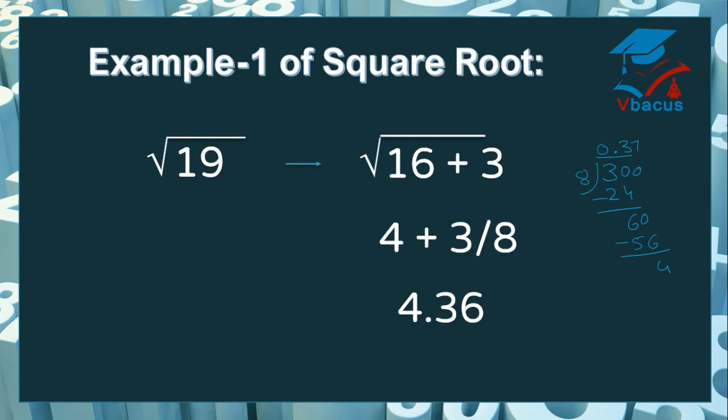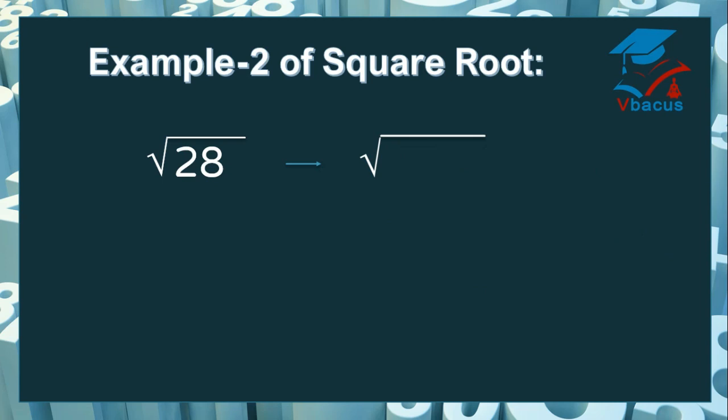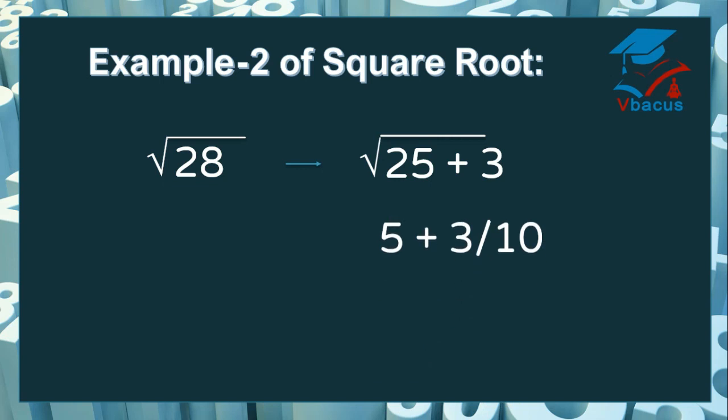You can check in the calculator. Let us take another example — find the square root of 28. I think 28 is very close to 25. Let us take 25 plus 3, which becomes 28. The square root of 25 is 5, and the remaining number is 3. Divide 3 by 10, which is double of 5.